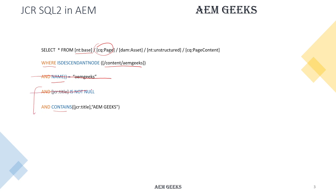You can use CONTAINS() to filter by title value. If the property is not there, the page will not appear in the result set. For example, CONTAINS(jcr:title, 'AEM Geeks') will give you pages which have a title of 'AEM Geeks'. You can arrange your result set using ORDER BY — there is a space between ORDER and BY.